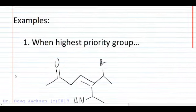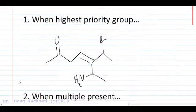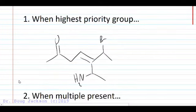Okay, now let's have a look at a few examples when the ketone is the highest priority group. Here we are asked to circle the parent chain.